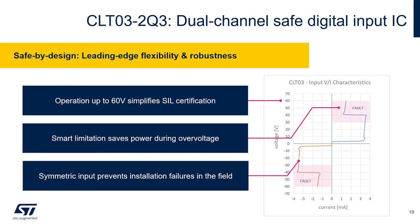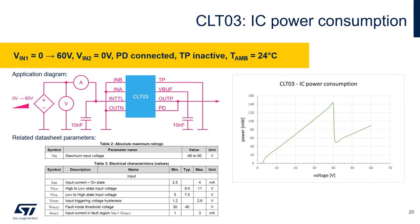The symmetric input characteristics brings several advantages and prevents failures caused by wrong wiring installation in the field. For a better idea about power dissipation savings, the following measurement has been done: the input voltage was smoothly increased from 0 up to 60 volt and power dissipation in the channel evaluated. The test pulse generator was disabled to approach worst case conditions. As visible on the right side waveform, the power dissipation drops down significantly when the IC activates the reduced current limitation in the fault region, which happens typically around 40 volt.